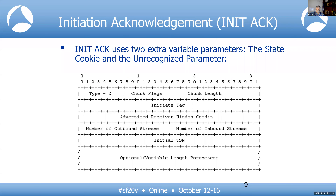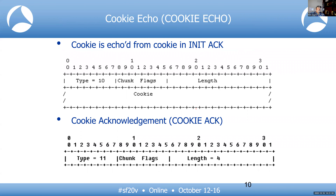The INIT-ACK is the second message in standing up the stream. This is where the MME defines the number of outbound streams — if a second path is needed, the MME can define that here and send it back. The eNB receives the cookie within the INIT-ACK and echoes it back to the MME for validation. The MME acknowledges that, and the stream is stood up.